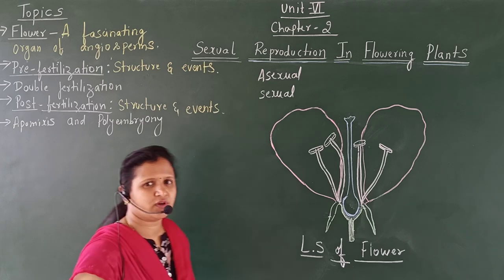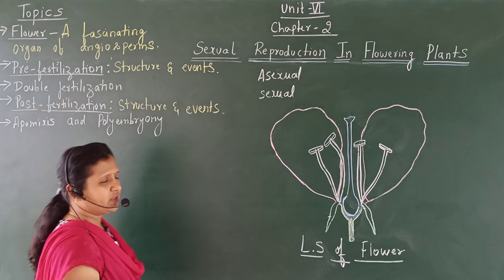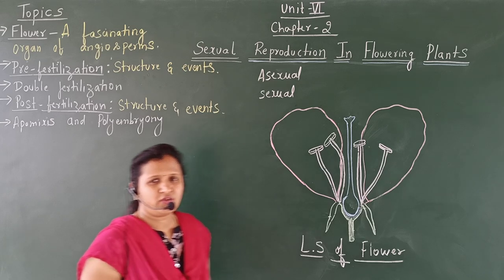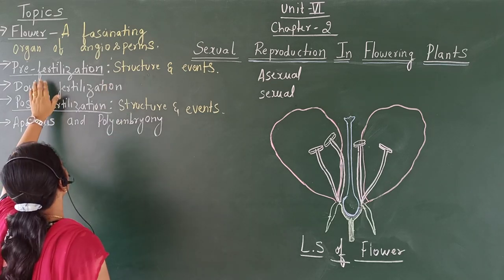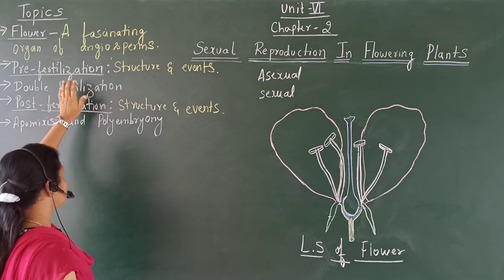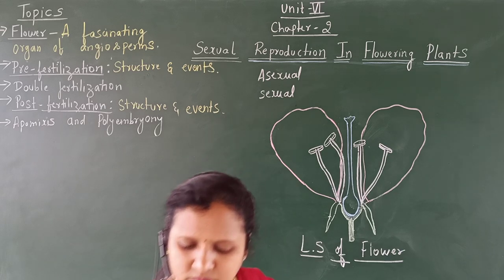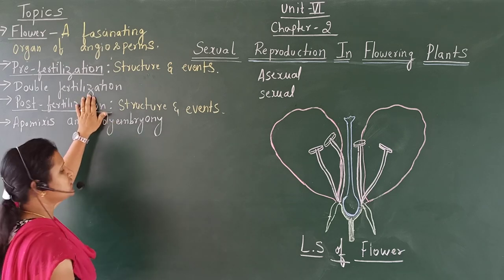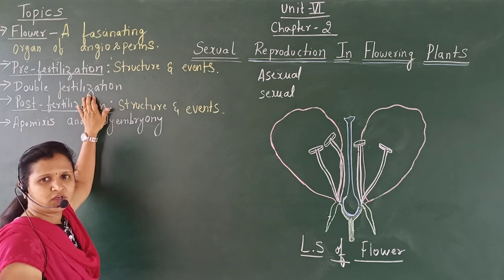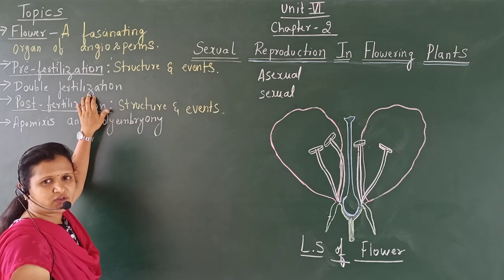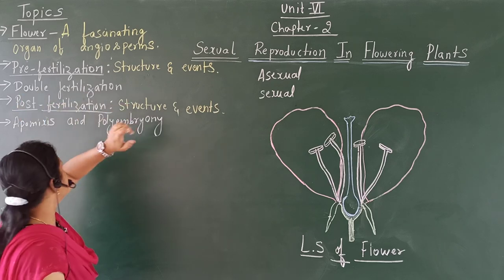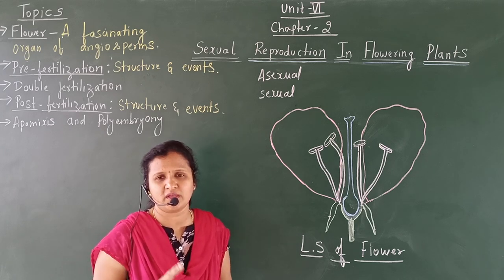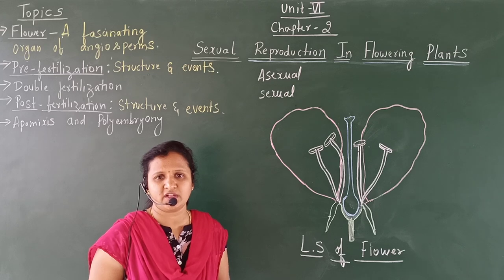The topics we will be discussing in this chapter are: the flower, a fascinating organ of angiosperms; pre-fertilization structures and events — meaning events which take place before fertilization; and fertilization, which is the fusion of male and female gametes resulting in the formation of the zygote. In angiosperms, the fertilization is a special type called double fertilization, because two male gametes will be fusing.